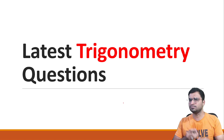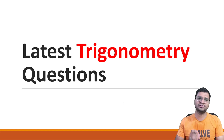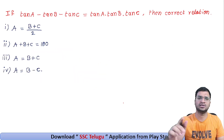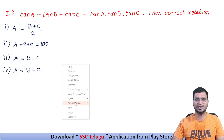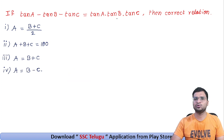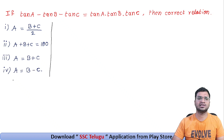The trigonometry questions are a little bit tough and a little bit different — not a standard pattern of questions. First of all, we are going to choose the answer. The question is: tan A minus tan B minus tan C equals tan A into tan B into tan C. Then what is the correct relation?